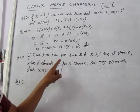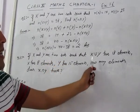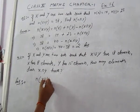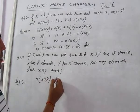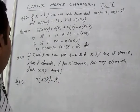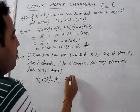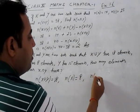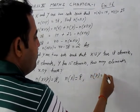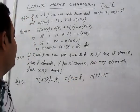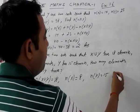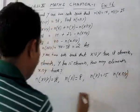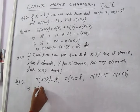Next, question 2. If X and Y are two sets such that X union Y has 18 elements, X has 8 elements, and Y has 15 elements, how many elements does X intersection Y have? We have to find out n(X∩Y). Applying the same formula: n(X∪Y) = n(X) + n(Y) - n(X∩Y).